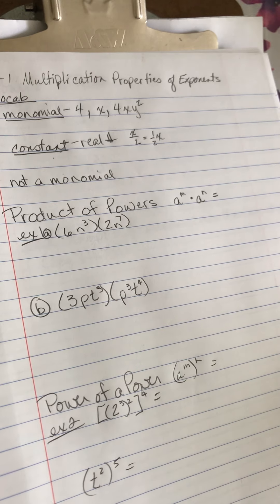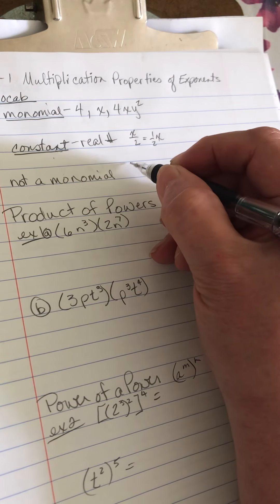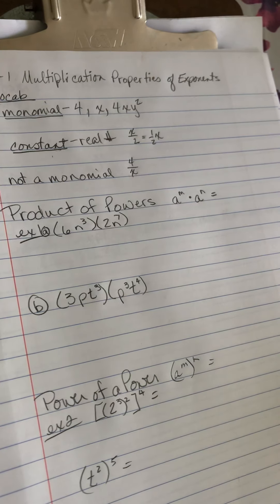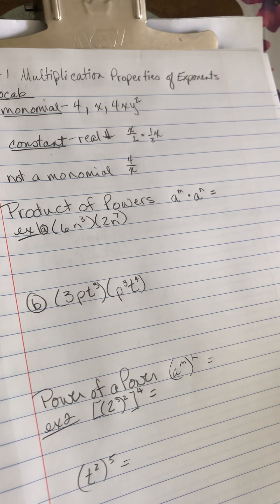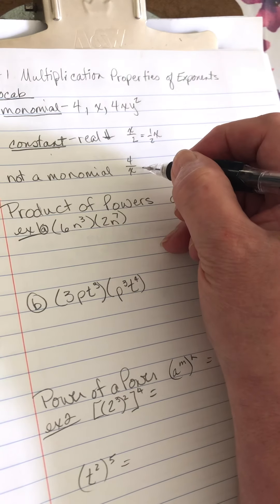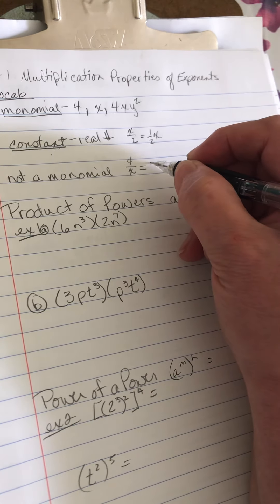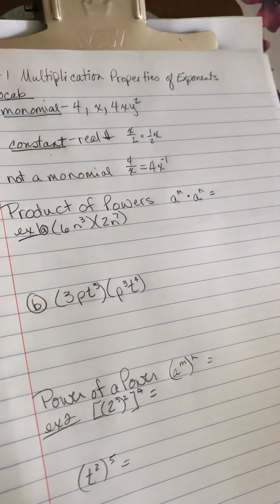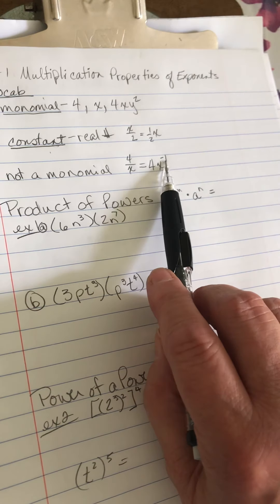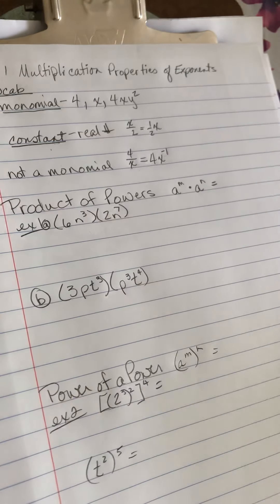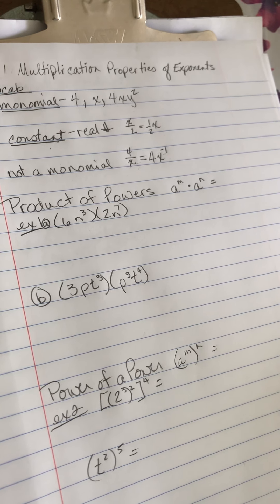Not a monomial is if I have 4 over X because that's a division problem. When I have a variable in the bottom, that's not a monomial. That's a problem. This, if you remember from pre-algebra, is the same as 4 times X to the negative first. So if it has a negative exponent, it's not a monomial either. Now hopefully you remember that that negative power means it's a reciprocal, and it doesn't go with the 4, just the X.